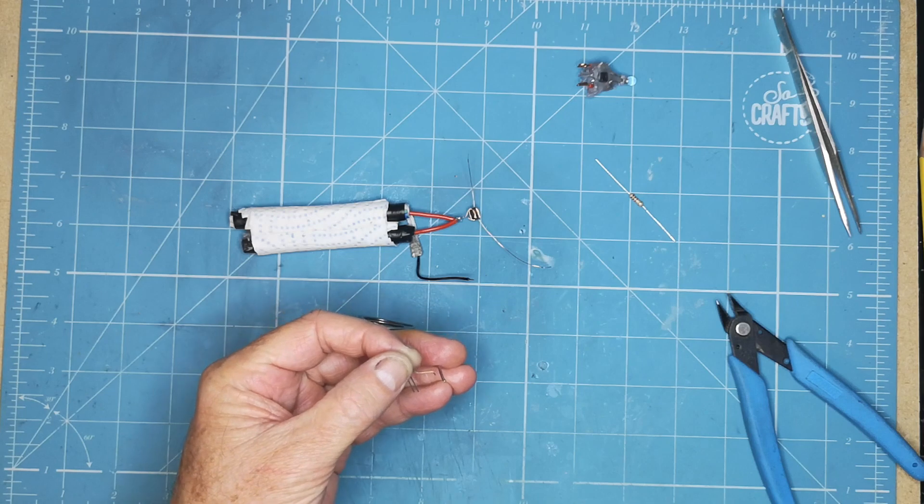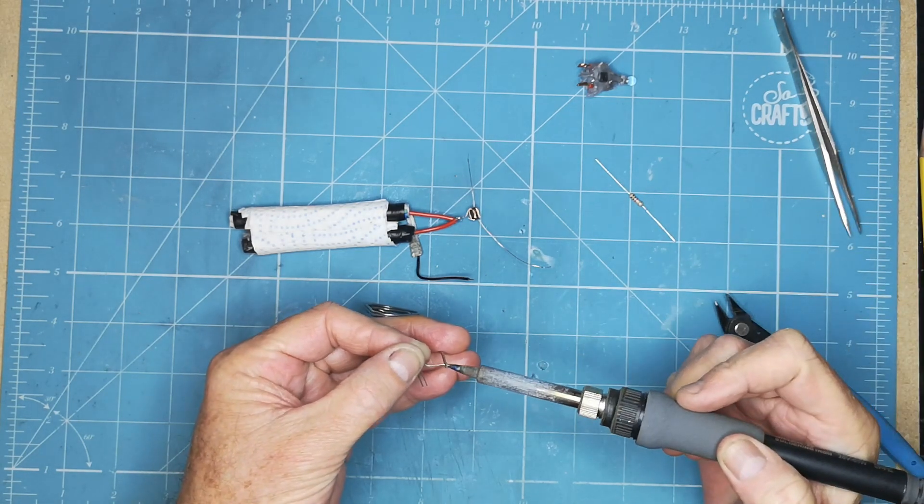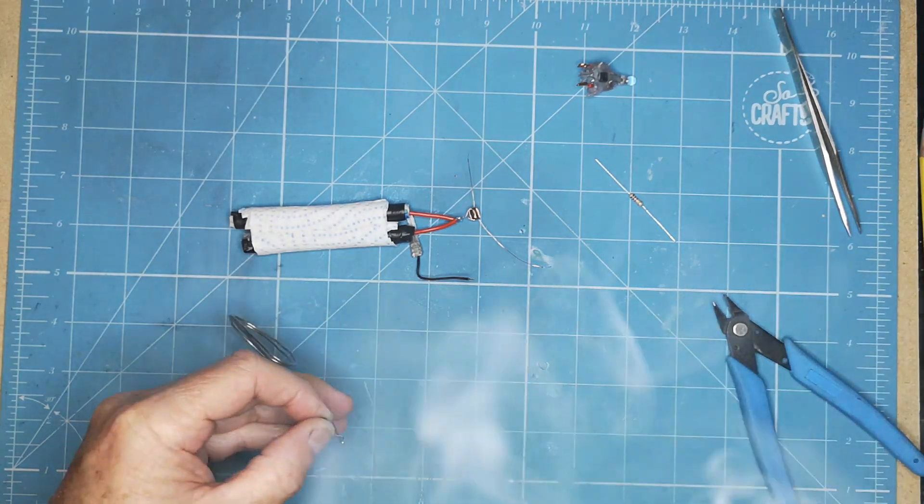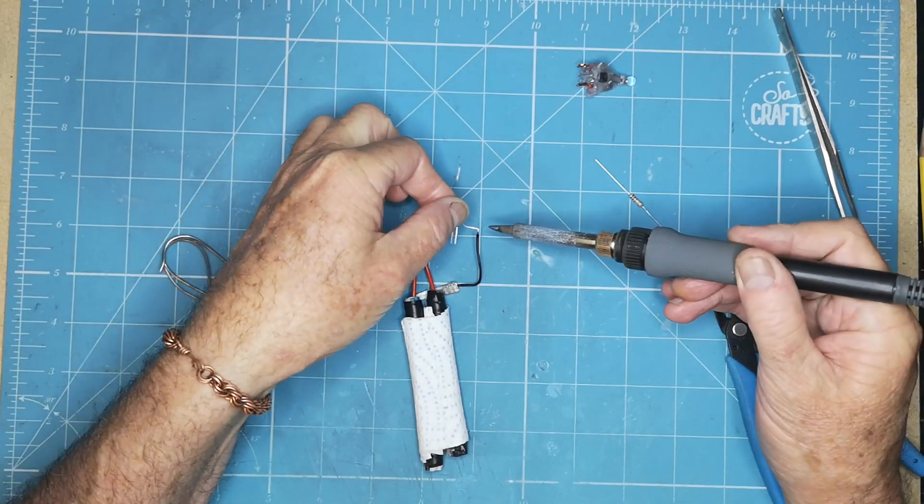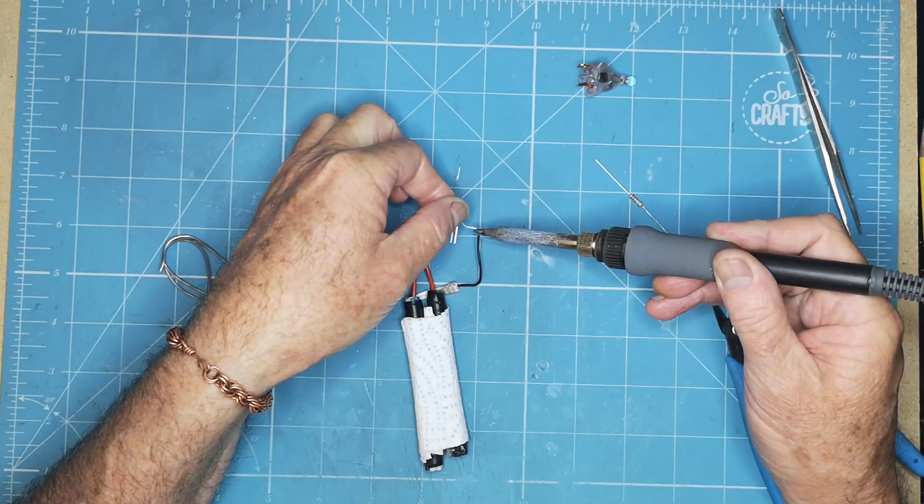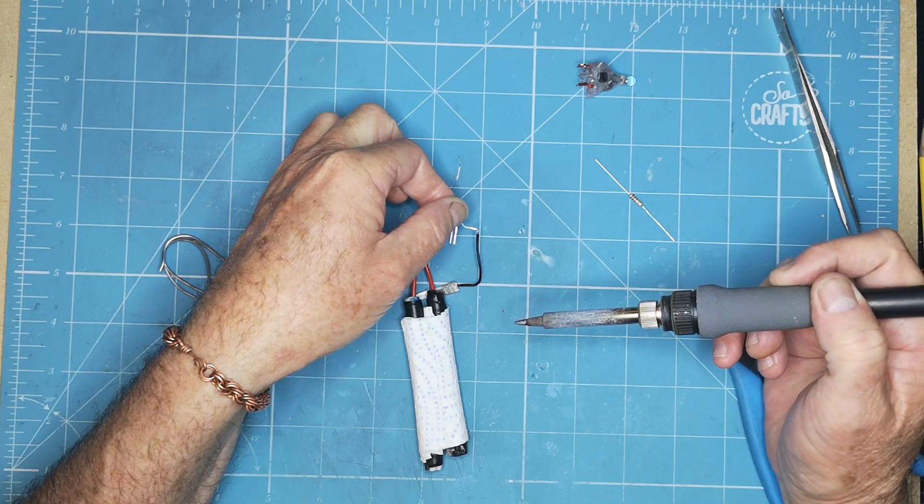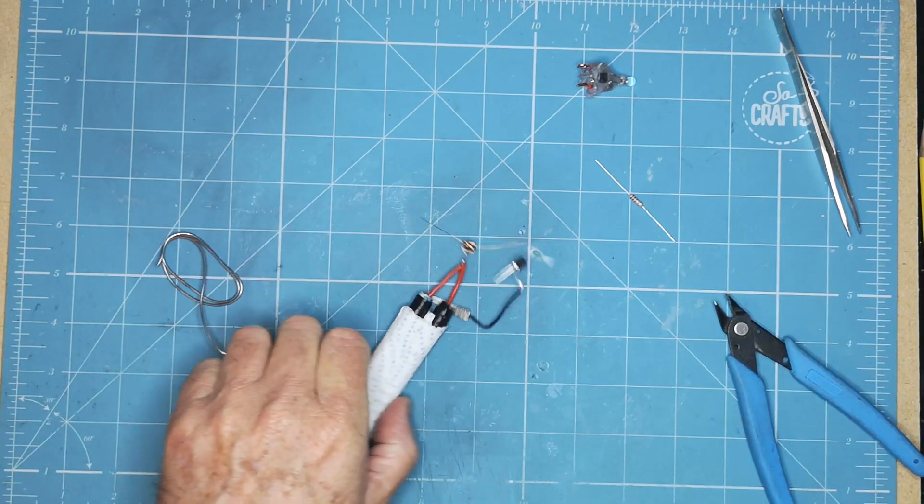So we'll just bend that over a wee bit and we will give this a quick tin. This solder is quite a little large actually, there we go that's good enough. And we'll just attach that to there, bit of a reflow. That's good to go.